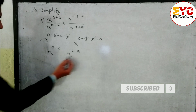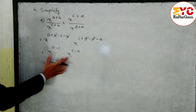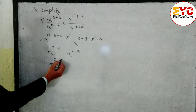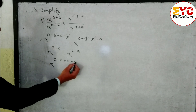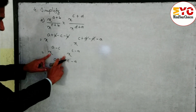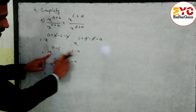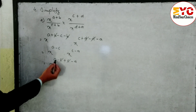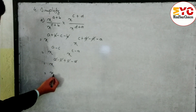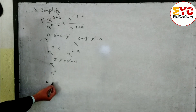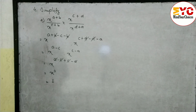Now base is same and in multiply we have to add the power. So x power (a minus c) plus (c minus a). You can see c and c cancel, a and a cancel. Remaining: x power 0. x power 0 is equal to 1. Hope you understand question number 4(a).